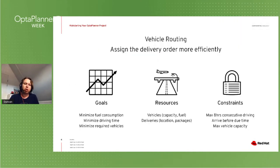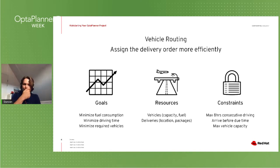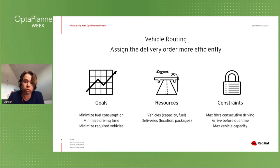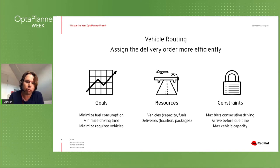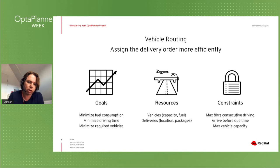The value proposition of OptaPlanner: looking at vehicle routing, the goal could be to minimize fuel consumption, minimize driving time, minimize required vehicles, or be more environmentally friendly. Resources could be vehicles and deliveries with capacity and fuel. Constraints could include eight hours maximum consecutive driving time or arriving before a due time for package delivery. Based on real benchmarks, versus traditional algorithms, we can improve driving time in vehicle routing by 15%. That might not sound much, but if your business spends multi-millions on shipping and routing goods, saving 15% is significant.